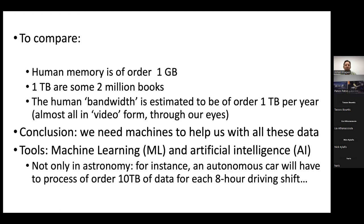The conclusion is that we really need machines to help us process all these data — there is no way to process this in our minds. The tools we use for that are machine learning and artificial intelligence, not only in astronomy. Autonomous cars, for instance, need to process around 10 terabytes of data for an eight-hour driving shift, showing also how remarkably capable our own brains are. AI is becoming very powerful and useful, but it does have dangers and pitfalls.